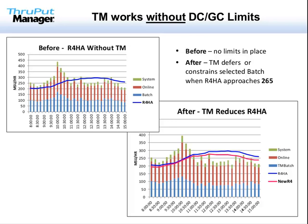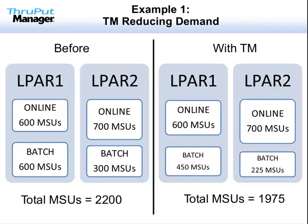Here's an example of two LPARs in the same CEC. Before using Throughput Manager, on LPAR1, online and batch are both contributing 600 MSUs to the peak rolling four-hour average. On LPAR2, online contributes 700 MSUs and batch 300. The total peak rolling four-hour average for the machine is 2,200 MSUs. After implementing TM, the installation decides that 25% of their batch should be eligible to be deferred. The result: online usage remains the same, while the batch is smaller for a new total peak rolling four-hour average of 1,975 MSUs — a savings of 225 MSUs per hour. The group limit can be reduced by 225 MSUs per hour without affecting online performance.